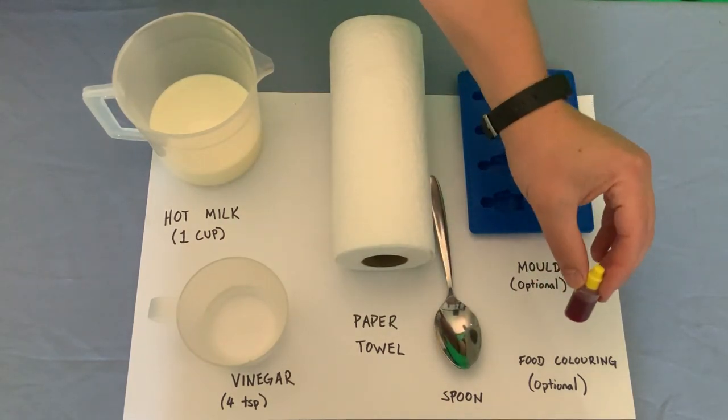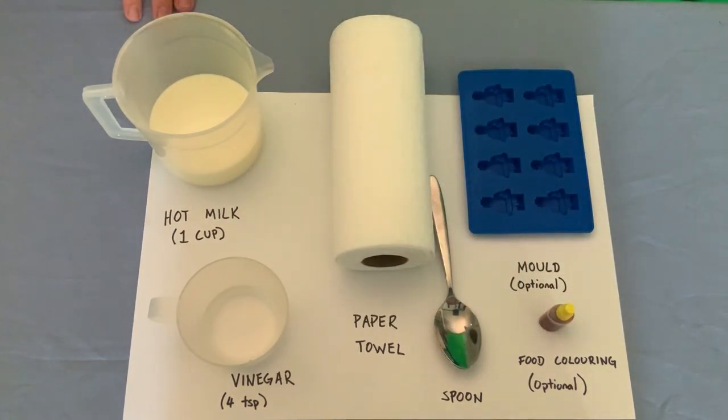Optionally you can also add some food colouring, which will give your plastic some colour. And if you've got a mould to make a shape, that's great. You could use a mould like this, a biscuit cutter. If you don't have one, don't worry. You can just squeeze your plastic into any shape that you like.